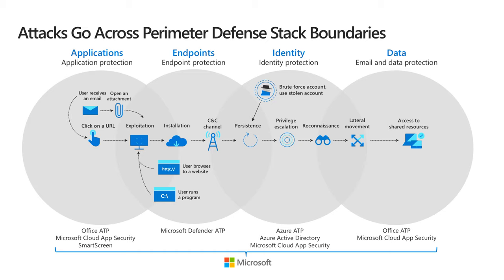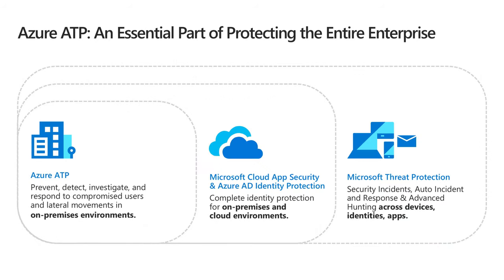Azure ATP has a unique role to play in the attack kill chain by helping to protect identities. Specifically, Azure ATP analyzes Active Directory — Windows Server Active Directory — from network, security events, and tracing data in on-premises environments to help protect those environments from attackers. Azure ATP is actually a sensor that gets installed on a Windows Server Active Directory domain controller. To make sure an organization is secure from end to end, it's critical to have the best security products and to have security products that work together seamlessly and are integrated out of the box.